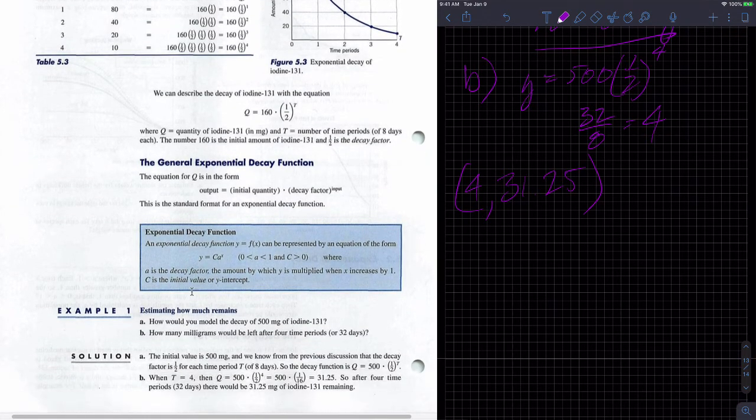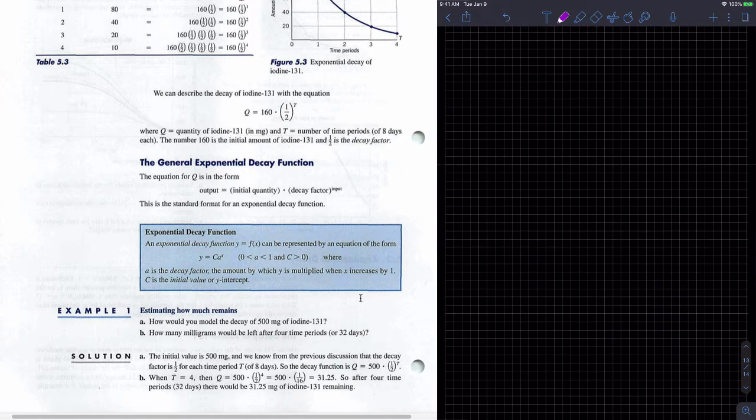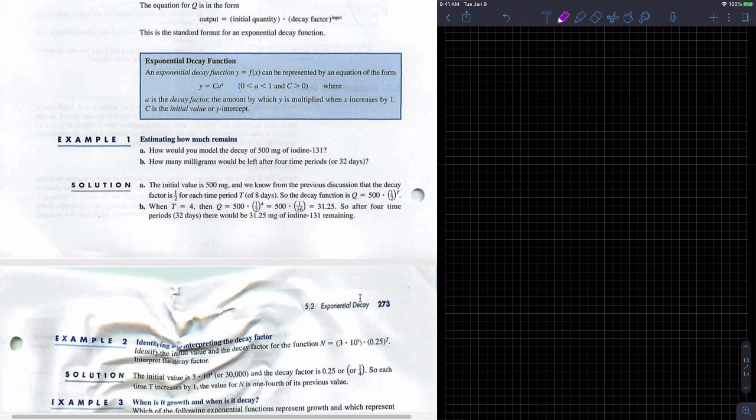And let's see what the book did for us. 31.25 after 32 days on our model looks the same. They just used Q and T instead of I used Y and I think T, right? We could have used Y and X and you could just let any letters that you desired.